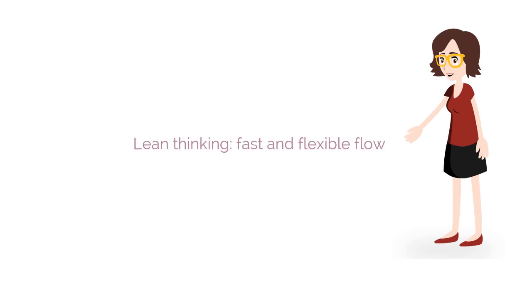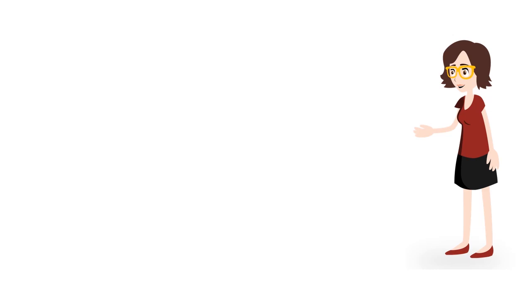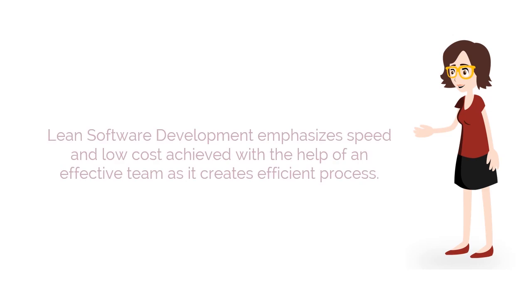Lean software development emerged from lean thinking, fast and flexible flow. Its goal is to deliver maximum value to customers with optimum efficiency. Lean software development emphasizes speed and low cost. This can be achieved with the help of an effective team, because an effective team can create an efficient process. With constant process improvement and quality products, one can achieve high speed and low cost.